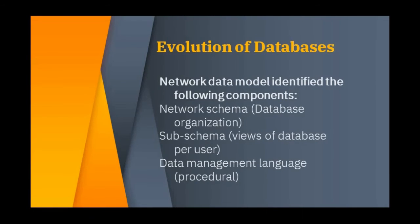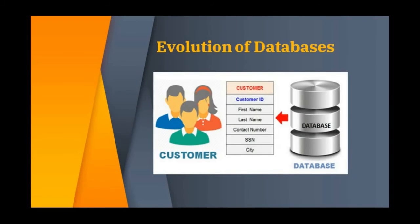The Network Data Model identified the following components: Network Schema, Database Organization, Sub-Schema, View of Database Per User, and Data Management System. In a database you can store information such as username, customer name, customer ID, first name, last name, and customer number — any information you want to put into your computer.